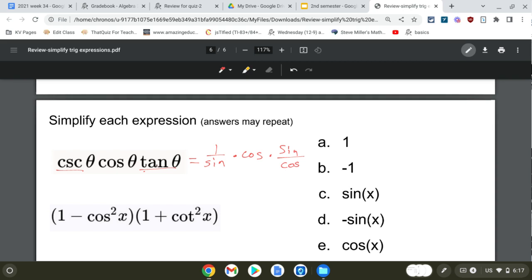Alright, so this cosine up top can cancel with that one in the bottom. This sine in the top can cancel with this sine in the bottom. And so that's going to leave me with 1 as my answer. So this first one, 1 is my answer.